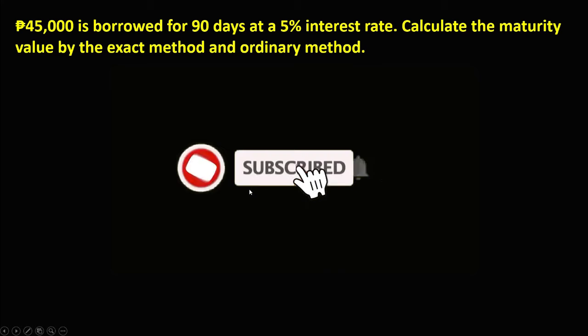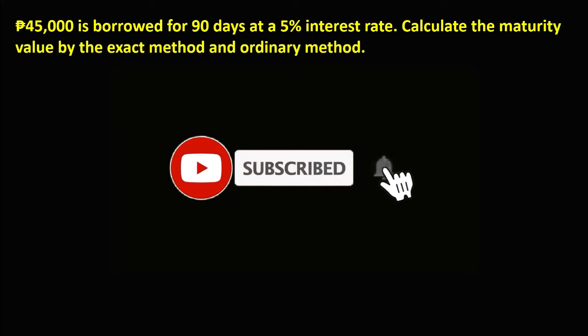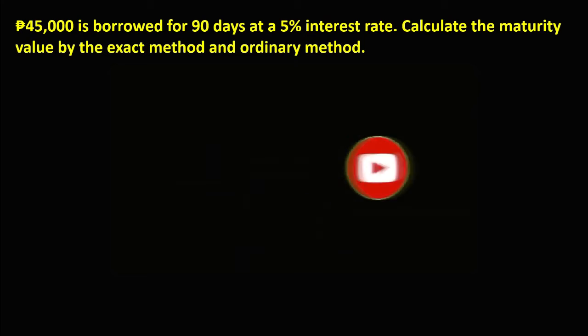Let's solve this problem. If 45,000 pesos is borrowed for 90 days at a 5% interest rate, then calculate the maturity value by the exact method and the ordinary method. First, we need to list all the given values from this problem.